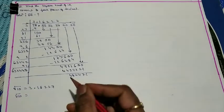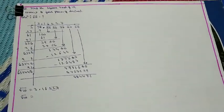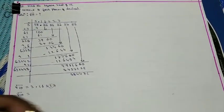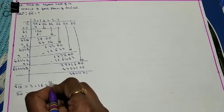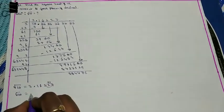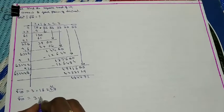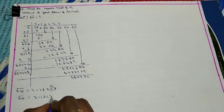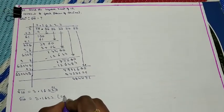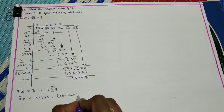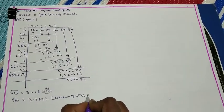Since the 5th decimal place digit is 7 (greater than 5), we add 1 to the 4th decimal place. Therefore √10 = 3.1623 correct to 4 decimal places.